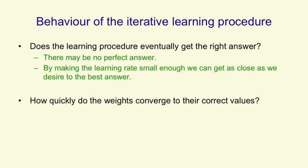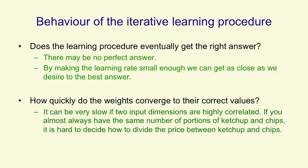Another question is how quickly do we get towards the best answer? Even for a linear system, the learning can be quite slow, this kind of iterative learning. If two input dimensions are highly correlated, it's very hard to tell how much of the summed weight on both of those input dimensions should be attributed to each input dimension.